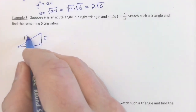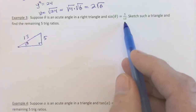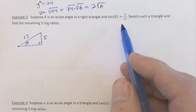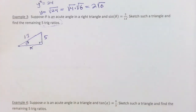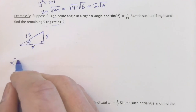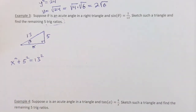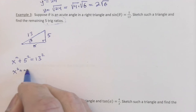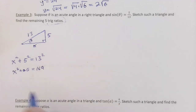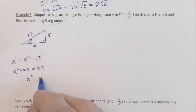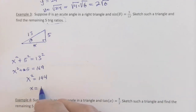Label the adjacent leg x and apply the Pythagorean theorem: x² + 5² = 13², so x² + 25 = 169. Subtracting 25 from both sides: x² = 144, and the positive square root is x = 12. This problem was designed to come out nicely — the adjacent side is 12.